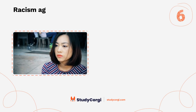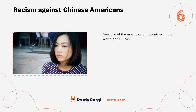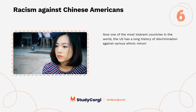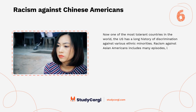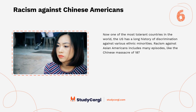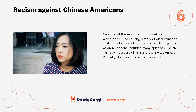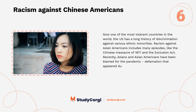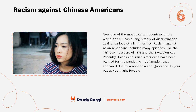Racism Against Chinese Americans. Now one of the most tolerant countries in the world, the U.S. has a long history of discrimination against various ethnic minorities. Racism against Asian Americans includes many episodes, like the Chinese Massacre of 1871 and the Exclusion Act. Recently, Asians and Asian Americans have been blamed for pandemic defamation that appeared due to xenophobia and ignorance. In your paper, you might focus either on historical or current evidence.